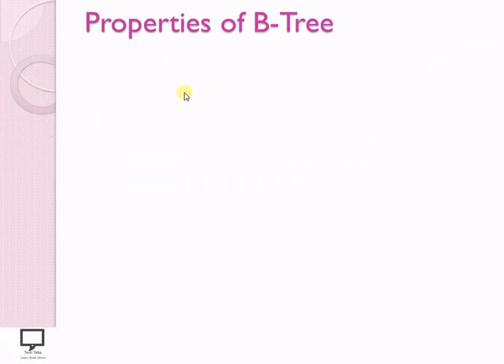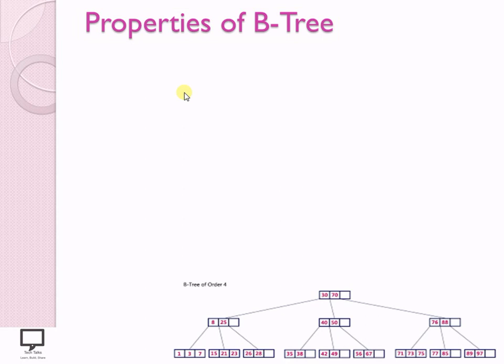Now let's start with the B-Tree. The prerequisites for the deletion operation on a B-Tree are the properties of the B-Tree — you must know these properties. Here in this slide, I am going to explain the properties of B-Tree. I am assuming all of you already know what a B-Tree is, why it is called an M-ordered or M-way B-Tree, and how to perform insert and search operations. Now let's start with the properties using an example.